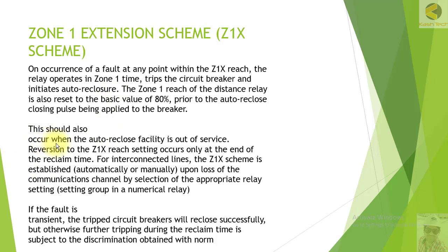This reversion could also occur when the auto-reclose facility is out of service; reversion to Z1X reach setting occurs only at the end of the reclaim time. For interconnected lines, Z1X is established automatically or manually upon loss of the communication channel by selection of an appropriate relay setting group in a numerical relay. It is possible that a permissive overreach transfer trip scheme is used when the channel is healthy, and when the channel fails we can select the Z1X extension scheme — this is the available facility for fast tripping when communication has failed.